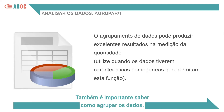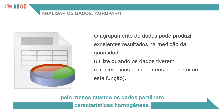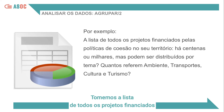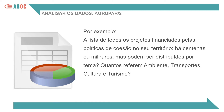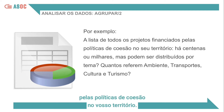It's also important to know how to group data. This allows us to make quantitative measurements, at least when the data has homogeneous characteristics. Let's see an example. Take the list of all the projects financed by cohesion policies in your territory. That gives us hundreds, if not thousands, of values.